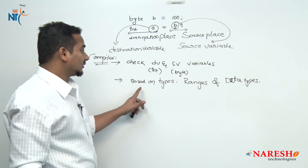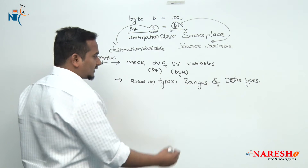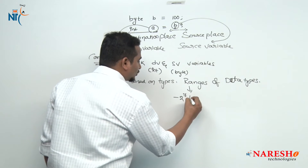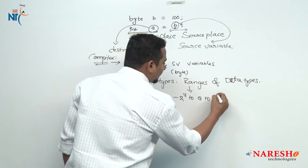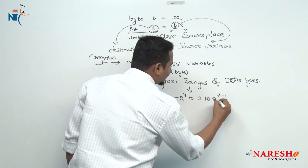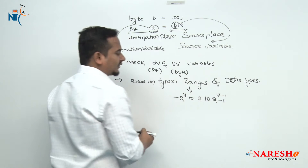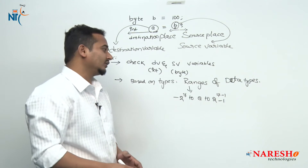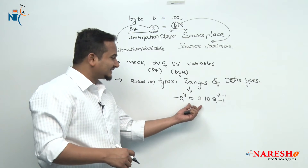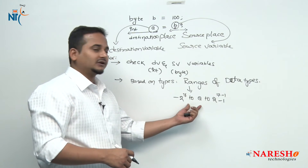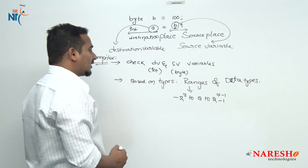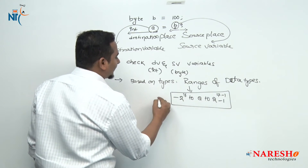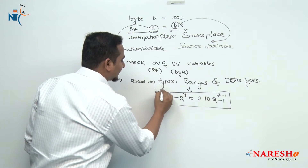Now what is the range of the byte data type? It is minus 2 to the power 7 to 2 to the power 7 minus 1. How to calculate the ranges we already discussed in the last video — if you have any doubt in this region, better to go through the old video. This is the range of the source variable, which is the byte variable.